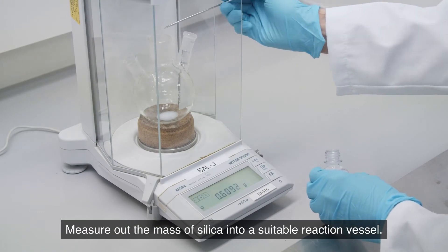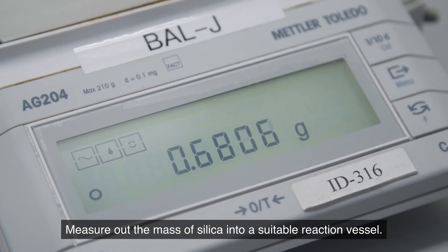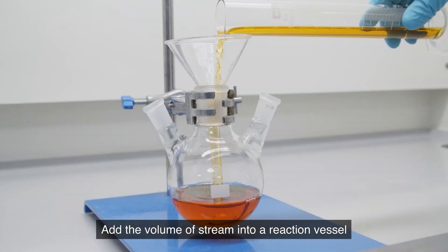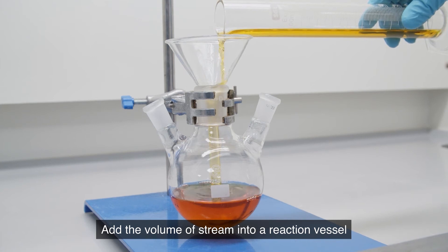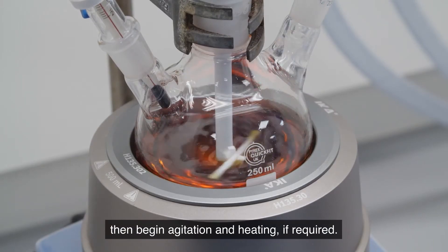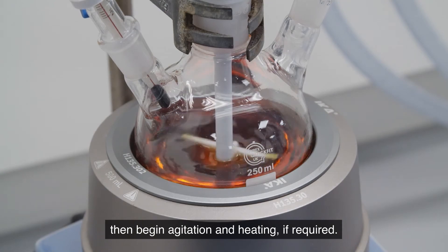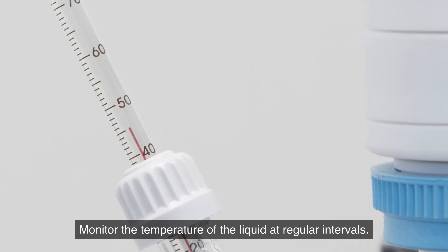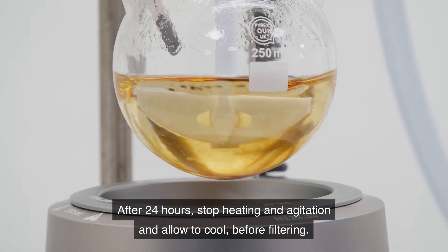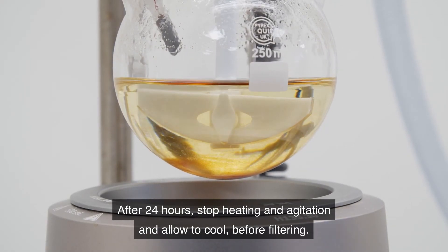Measure out the mass of silica into a suitable reaction vessel. Add the volume of stream into the reaction vessel and then begin agitation and heating if required. Monitor the temperature of the liquid at regular intervals. After 24 hours stop heating and agitation and allow to cool before filtering.